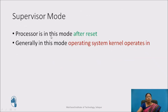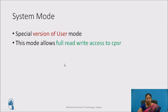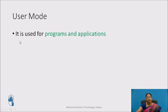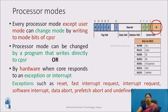In supervisor mode, the processor enters this mode after reset. Generally, the operating system kernel operates in this mode. System mode is a special version of user mode and allows full read-write access to CPSR. User mode is used for programs and applications. This is the CPSR register — already shown in the registers video — where you can see the condition flags and the mode bits.